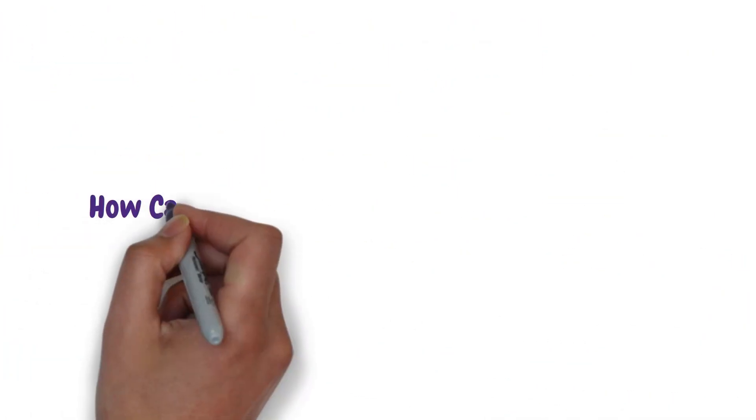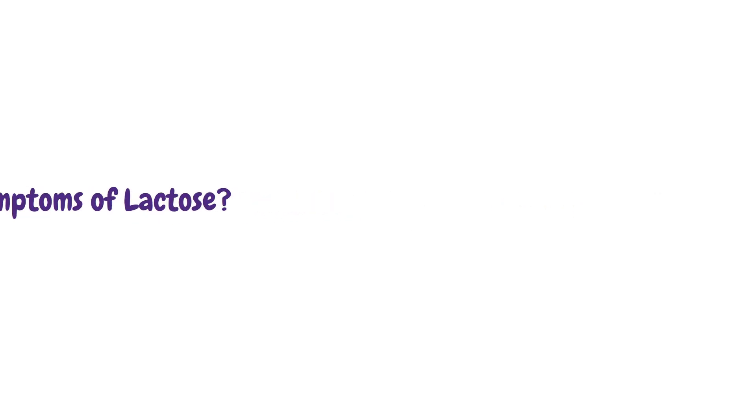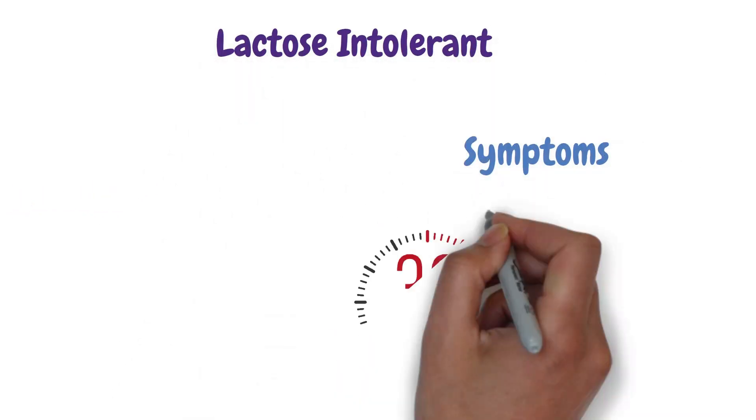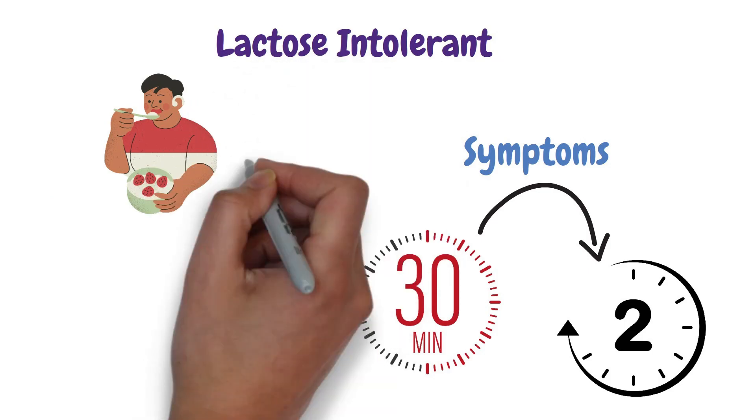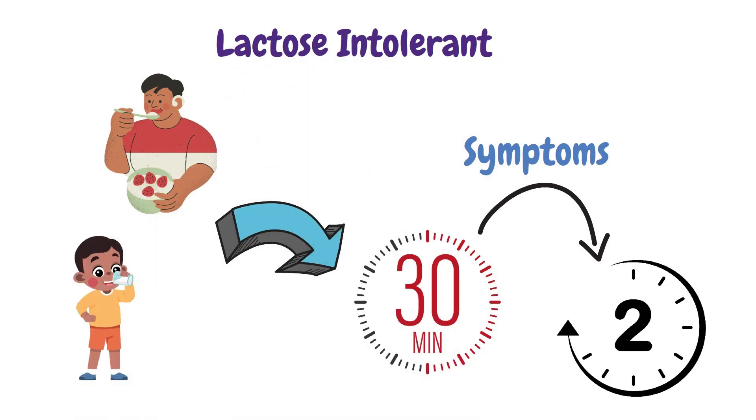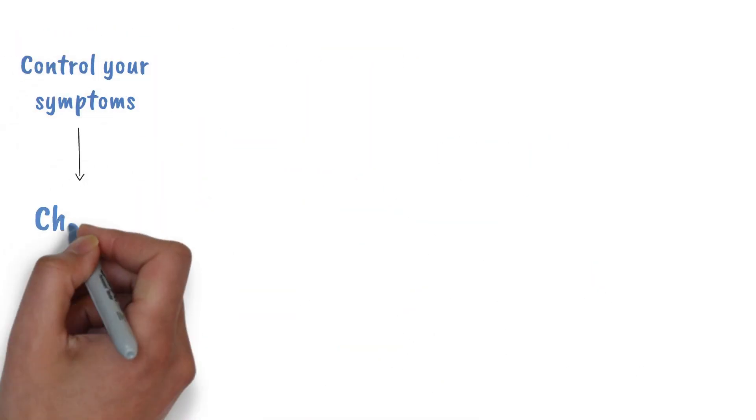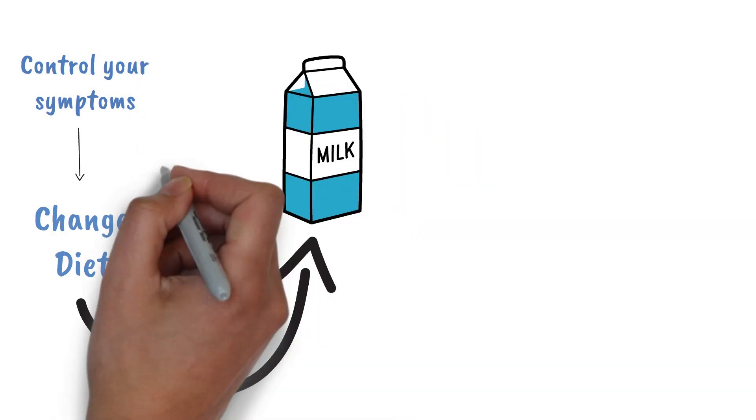So how can you control your symptoms? If you are lactose intolerant, you can have symptoms from between 30 minutes to 2 hours after eating or drinking dairy products. You can control your symptoms with changes to your diet, like avoiding dairy foods.